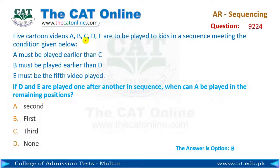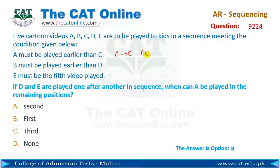Five cartoon videos A, B, C, D, and E are to be played to kids in a sequence meeting the following conditions: first, A must be played earlier than C; second, B must be played earlier than D (B ke baad D aayega); and third, E must be at the fifth position.